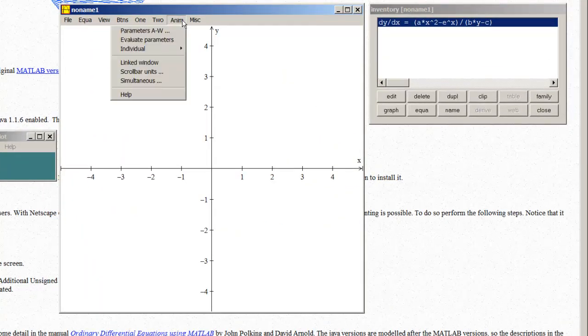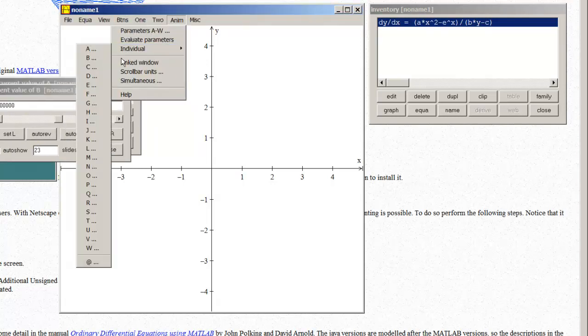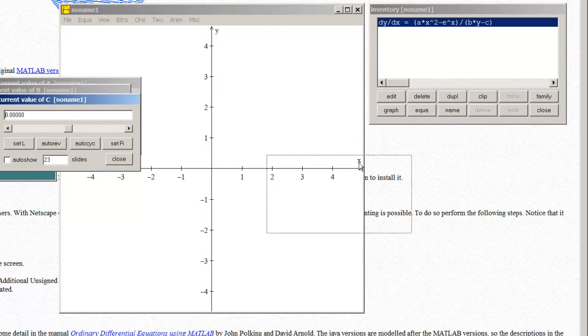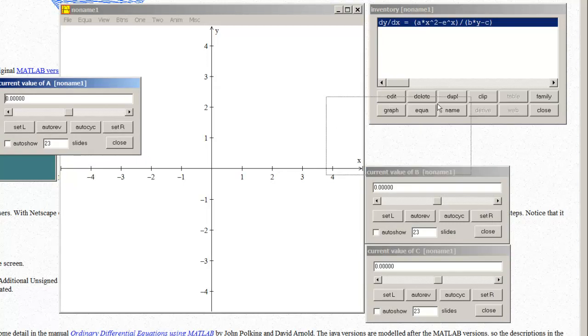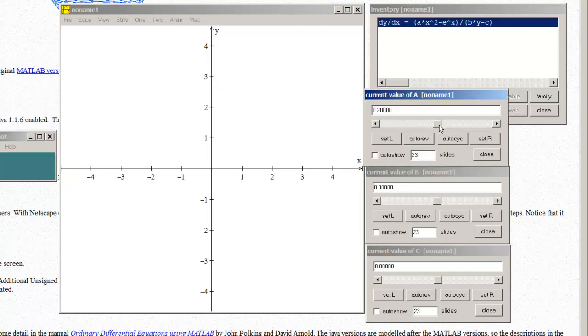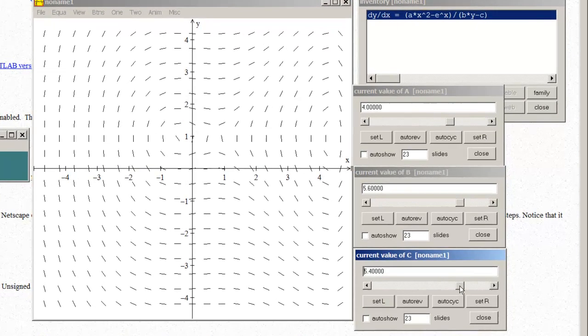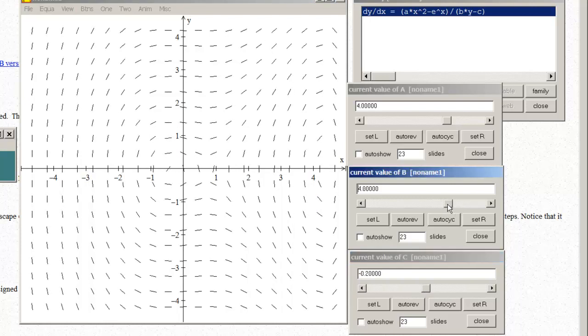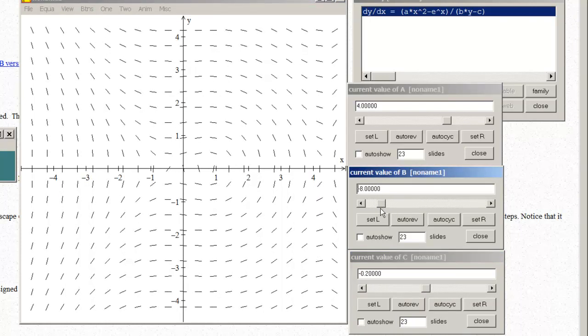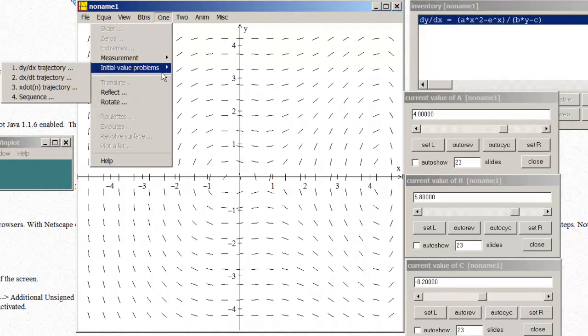And I will go to Anim, which stands for Animation. Individuals A, Individual B, Individual C. Now if you'll notice, A, B, and C are all set to zero. But if I change them around, I get a changing slope field. I don't know if you can see the slope field gradually changing as I change these values around.